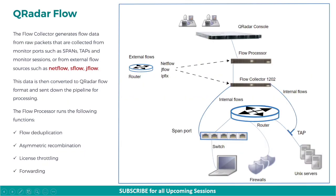Let's understand the architecture. Observe the image on the right of the screen. The flow collector connects to various tapping points like switch, span port, firewalls, Unix servers, etc. The flow collector generates flow data from raw packets collected from monitor ports such as spans, taps and monitor sessions, or from external flow sources such as NetFlow, SFlow, and JFlow. This data is then converted to QRadar flow format and sent down the pipeline for processing. The flow processor runs the following functions: flow deduplication, asymmetric recombination, license throttling, and forwarding.